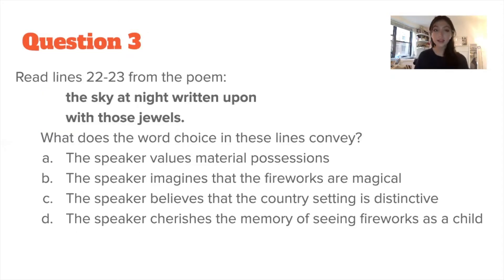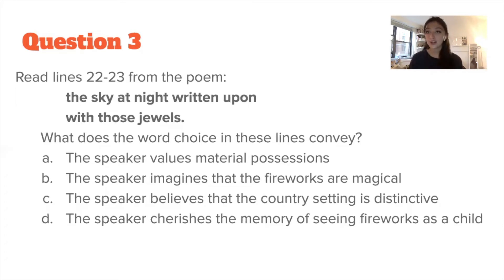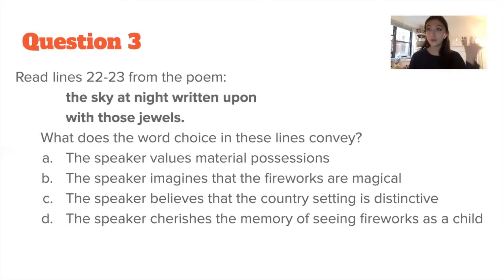Question three: read lines 22 through 23 from the poem — 'The sky at night written upon with those jewels.' That doesn't tell us enough by itself, so we have to go back in the text. This is a detail question, and the key is understanding the context. Going back, we realize we're in the second stanza where we're still describing the fireworks. So this is a way to describe the fireworks: 'The sky at night written upon with those jewels.' The jewels are shiny, bright, and beautiful — that's how they're using it to describe the fireworks.